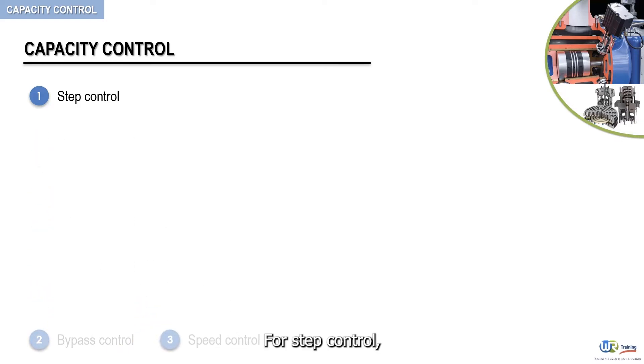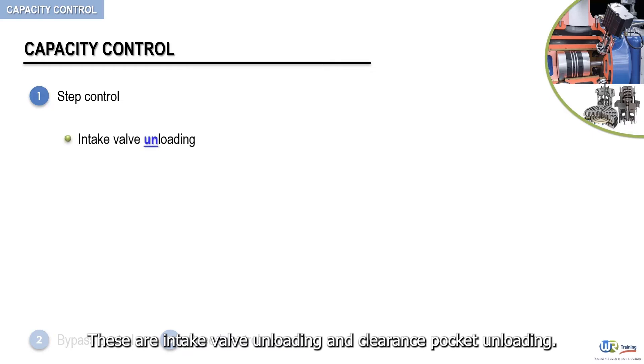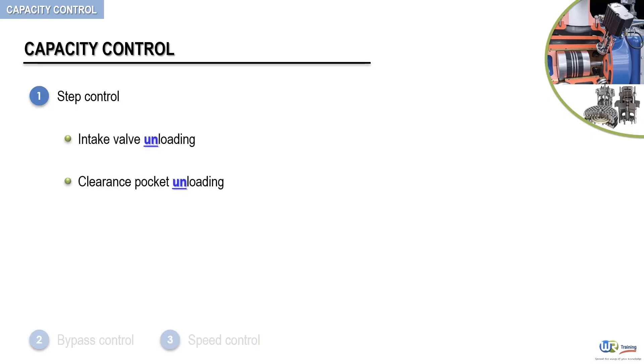For step control, there are two basic methods used for capacity control on reciprocating compressors. These are intake valve unloading and clearance pocket unloading. These two methods are sometimes used in combination with each other. In the latter arrangement, the capacity reduction is in fixed steps. We will see this in detail further ahead.